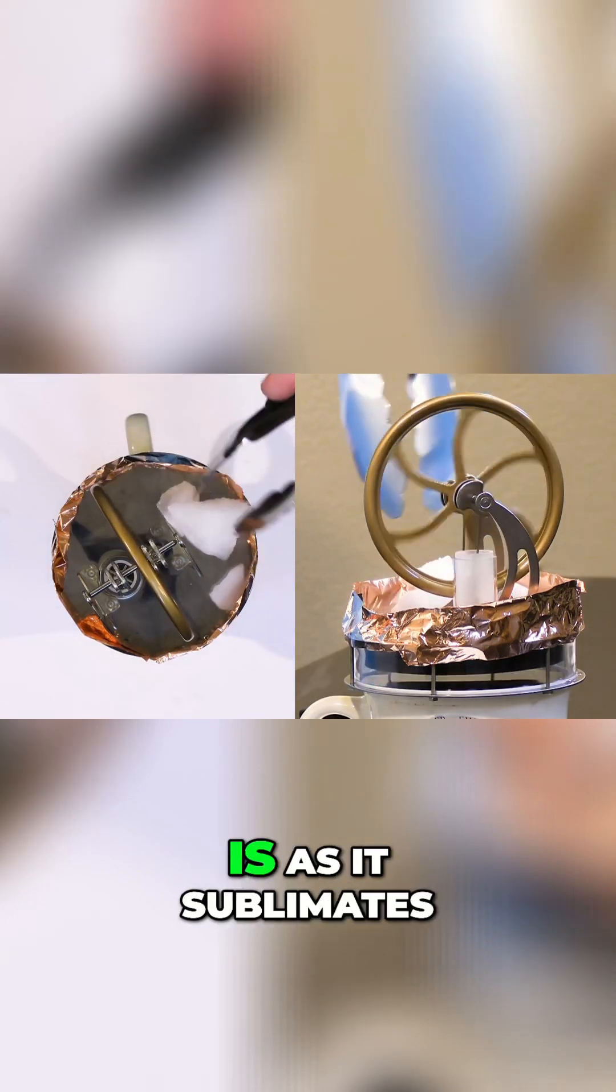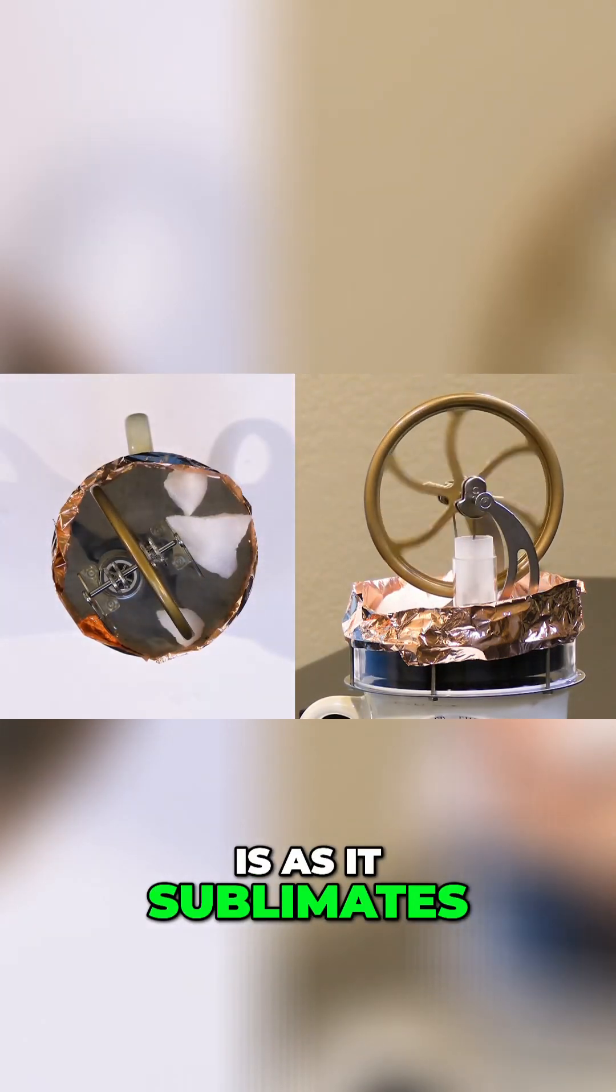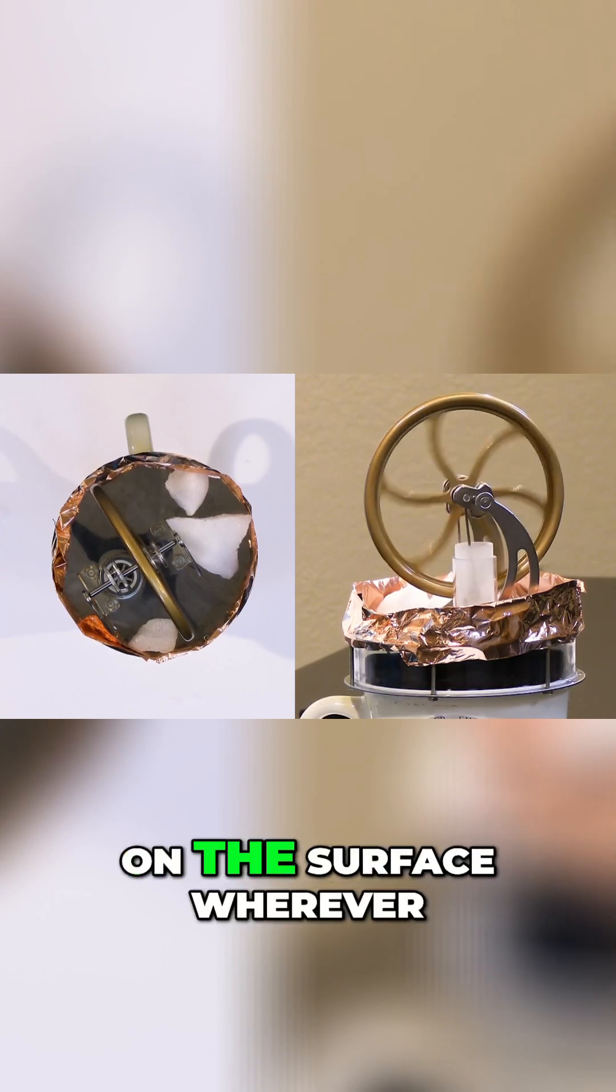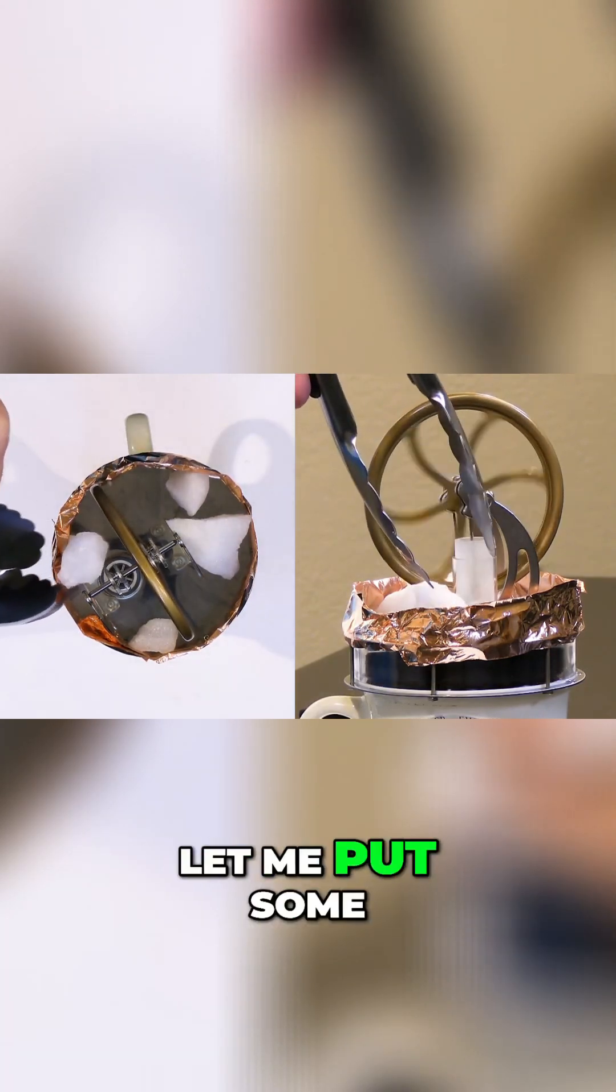So what's going on is as it sublimates, it turns directly into gas and then it starts to slide around on the surface wherever it is. We put some on this side.